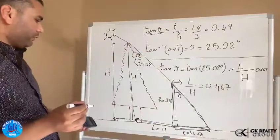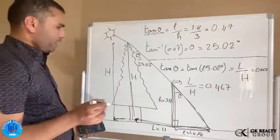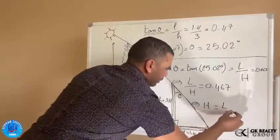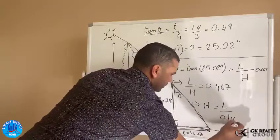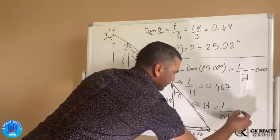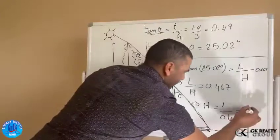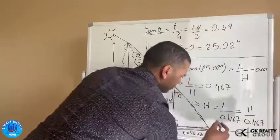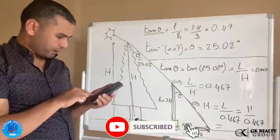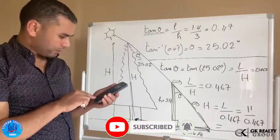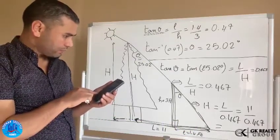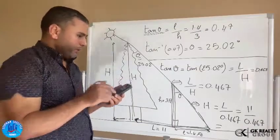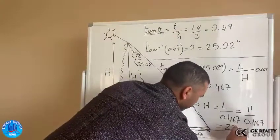So we're looking for H. Therefore, H is just L over 0.467. And here, 11 divided by 0.467, and it's going to be 23 points.